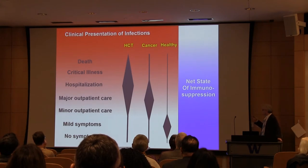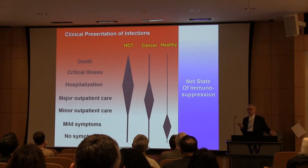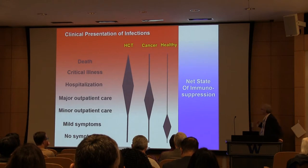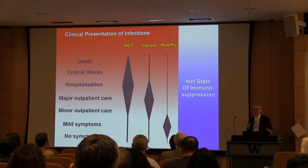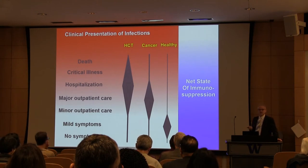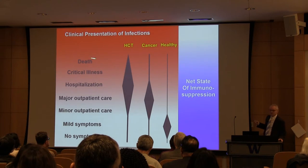This relates to the somewhat elusive but important term of the 'net stage of immunosuppression,' first framed by Dr. Ruben at Harvard, which describes the entirety of the immunosuppressive condition and determines the risk for infections — not only acquisition but progression and death. The HCT population, which stands for hematopoietic cell transplantation, falls into the category where infections can cause severe outcomes.